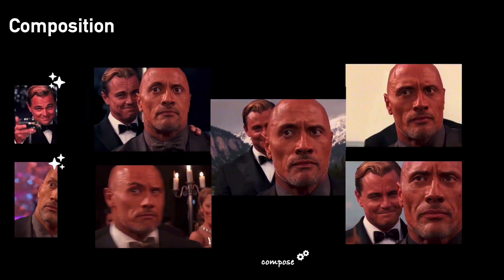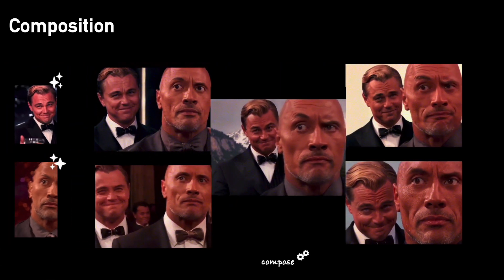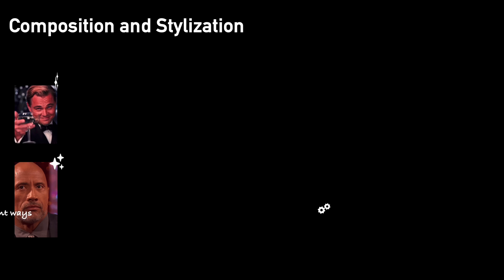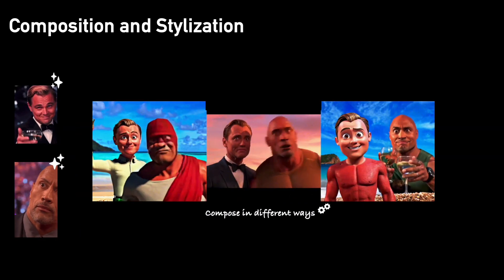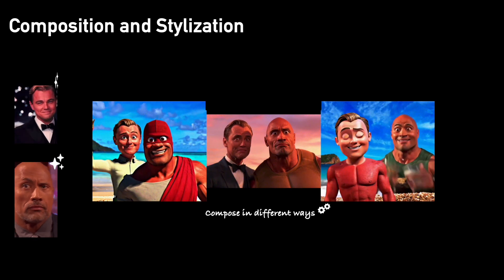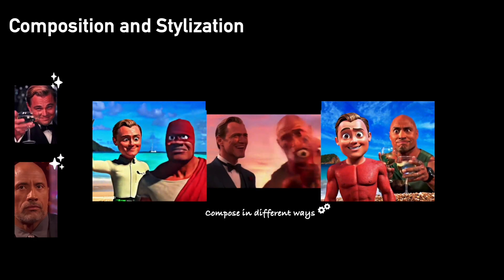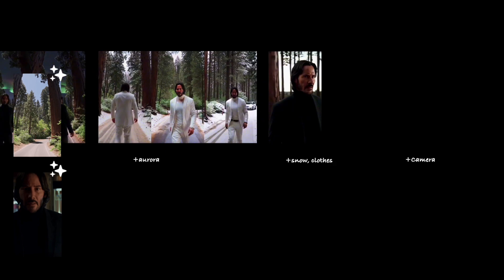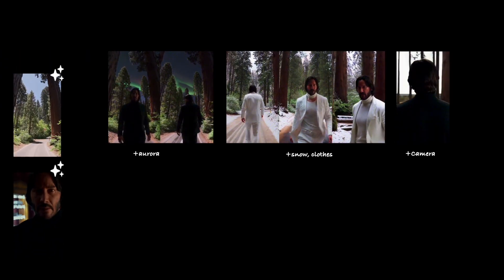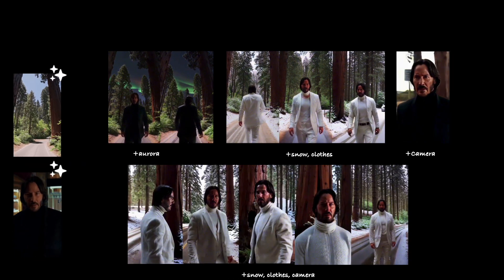For composition, we explore combining multiple identities while preserving their unique appearance and motion. Additionally, the appearance of one identity can be stylized and blended with another to create Pixar-style results by weighting the LoRAs. We further demonstrate global edits such as adding auroras or snow, changing the camera angle, or freezing motion mid-sequence.